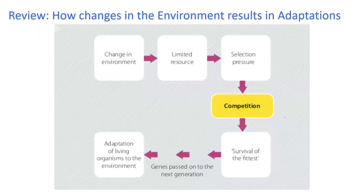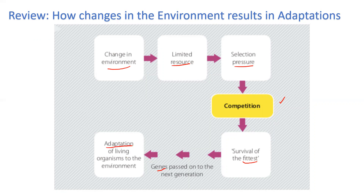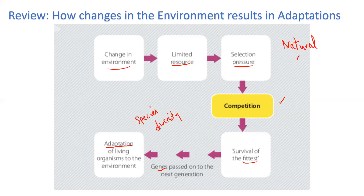Let's just review. When the environment changes, there are limited resources that lead to selection pressures and competition. Those that are best suited to the environment are able to pass on their genes, and we say they have inherited adaptations to that particular environment, and that leads to species diversity. That's what we basically looked at last week when we talked about the theory of natural selection.